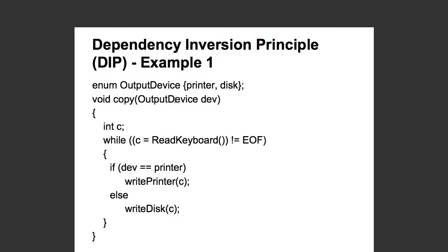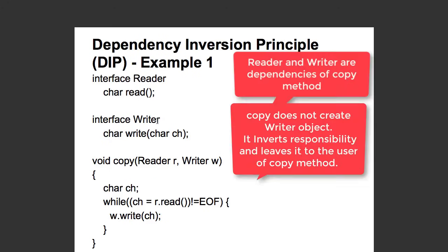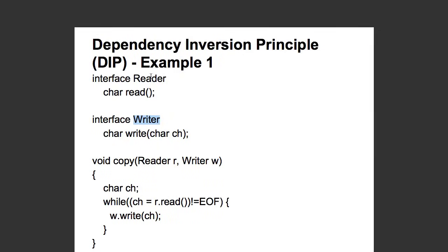The problem is as your number of output devices increases, this copy method needs to keep changing. A better implementation would be to create a simple interface like reader and have an interface writer. And the copy method can write from any reader to any writer. So the copy method does not change when you have a new writer or a new reader. This is a good example of a Dependency Inversion Principle.